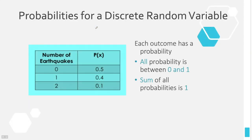We start off looking at something that looks very familiar from the previous chapter — a discrete random variable distribution. You'll notice that the variable itself is all whole number values, and our probabilities follow exactly what we said in the previous chapter. All probabilities have to be between 0 and 1, and the sum of all probabilities has to be 1. There may be some rounding error, but we always expect to get 1.